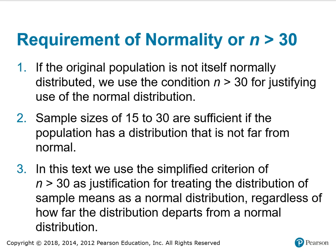The requirement of normality or n greater than 30: if the original population is not itself normally distributed, we use the condition n greater than 30 for justifying use of the normal distribution. Sample sizes of 15 to 30 are sufficient if the population has a distribution that is not far from normal. In this text, we use the simplified criterion of n greater than 30 as justification for treating the distribution of sample means as a normal distribution, regardless of how far the distribution departs from normal.